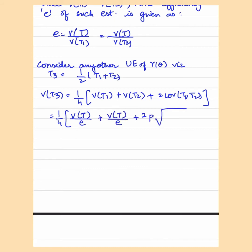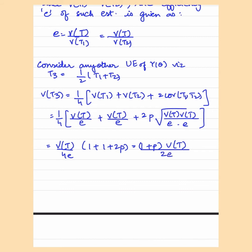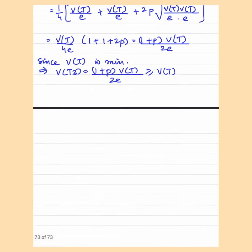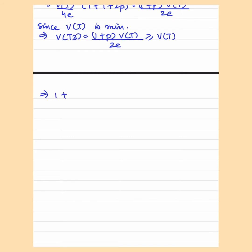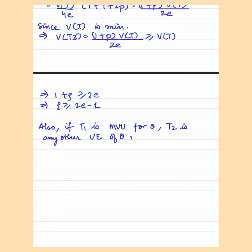This can be written as 1 upon 4 times variance of T upon E plus variance of T upon E plus 2 into rho under root of variance of T squared upon E squared. Upon simplification, since variance of T is the minimum variance unbiased estimator, variance of T3 has to be greater than or equal to variance of T. So 1 plus rho times variance of T upon 2E is greater than or equal to variance of T. So 1 plus rho is greater than or equal to 2E. Hence rho is greater than or equal to 2E minus 1.